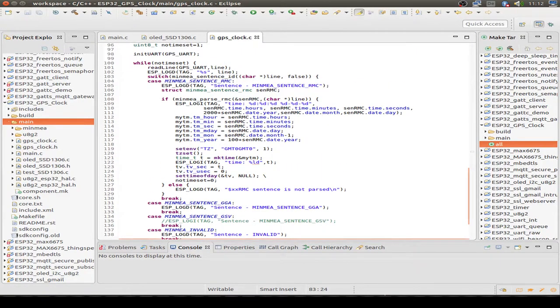Then I use the second library, the minmea library from GitHub. I'm reading out the NMEA sentence for the RMC. If we get one of the RMC sentences, then we collect the time data: hours, minutes, seconds, year, months, day, and so on.